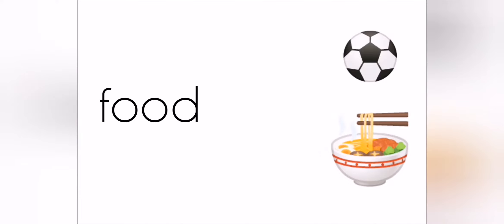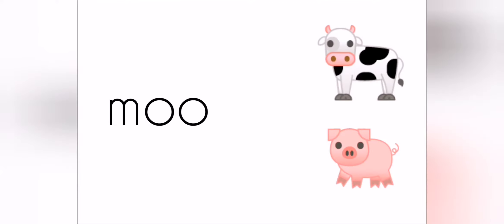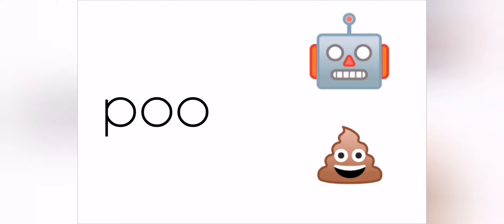Let's read the next word — get those robot arms ready: F, oo, D — food. Which emoji is a bowl of food? Yes, that's right, there it is. Let's have a look at the next word — segment and blend with those robot arms: M, oo — moo. Which animal emoji makes this sound? That's right, a cow does. Let's have a look at the next word — get those robot arms ready: P, oo — poo. Which emoji is poo? There he is.